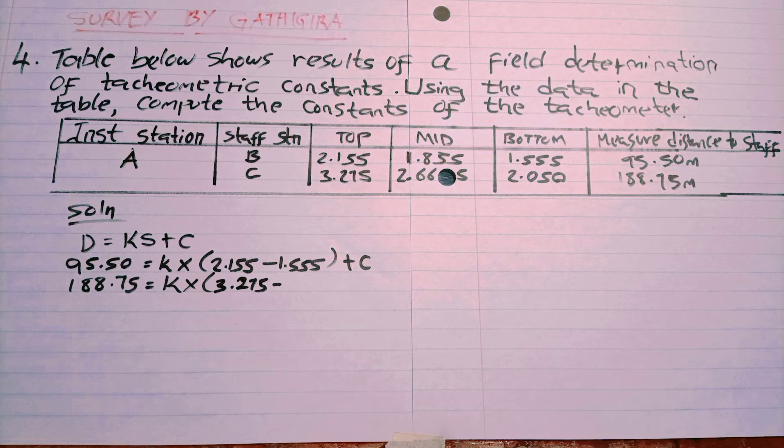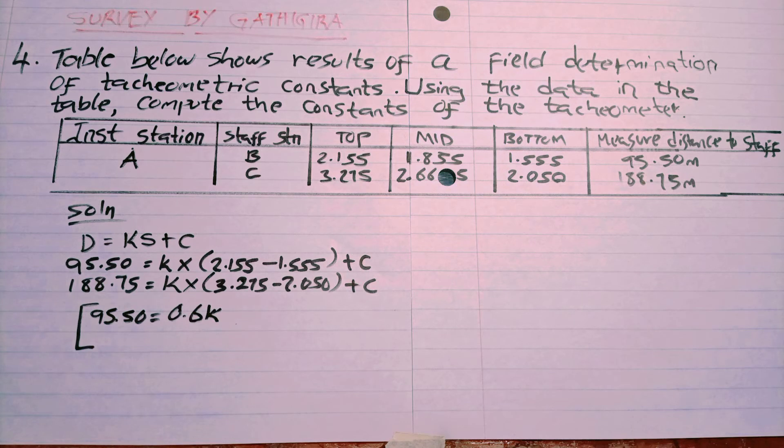We compare the two equations and use the mathematical formula for finding simultaneous equations. The two unknowns, the two unknown factors, will have one of them multiplying the other, and then we get for K.